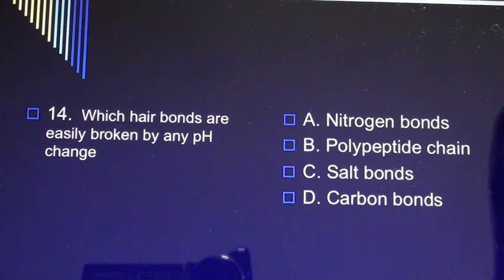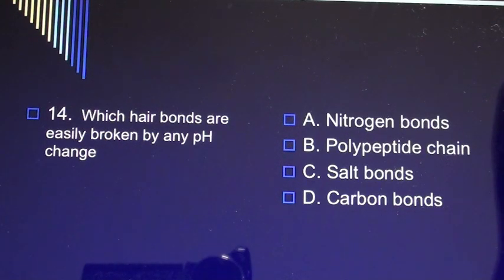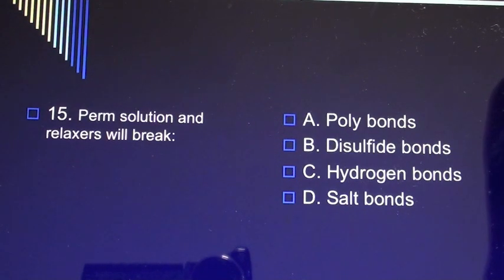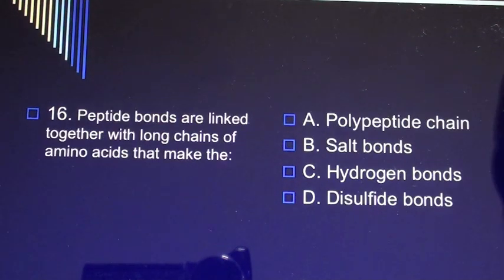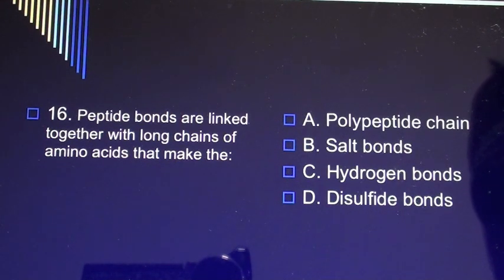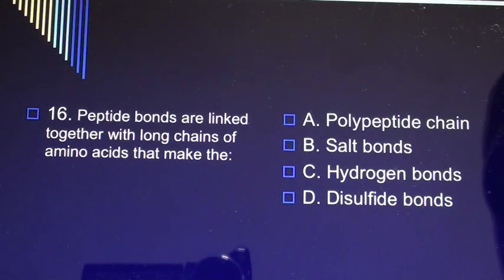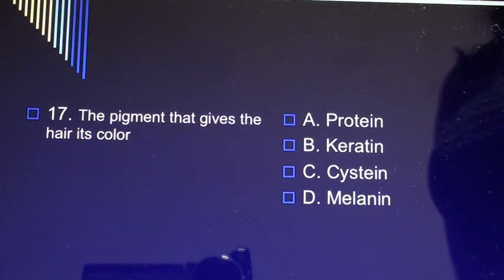Question 14: Which hair bonds are easily broken by any pH change? A) nitrogen bonds, B) polypeptide chain, C) salt bonds, D) hydrogen bonds. Question 15: Perm solution and relaxers will break A) poly bonds, B) disulfide bonds, C) hydrogen bonds, D) salt bonds. Question 16: Peptide bonds are linked together with long chains of amino acids that make the A) polypeptide chain, B) salt bonds, C) hydrogen bonds, D) disulfide bonds.